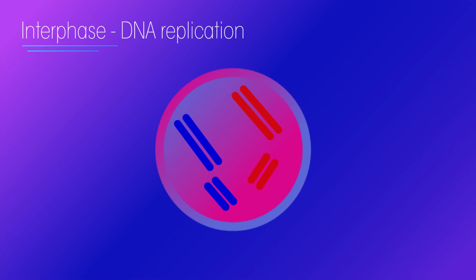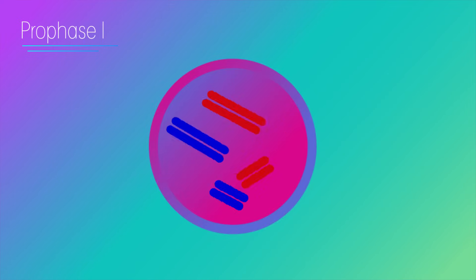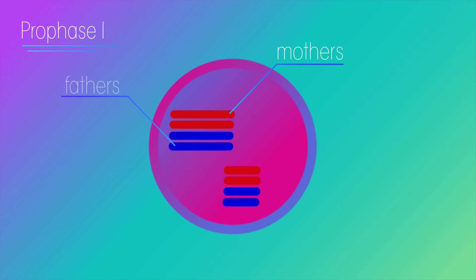In prophase one, the duplicated chromosomes join up with the pair from the other parent, so the mother's pair bind with the father's pair, forming a group of two chromosomes called homologous chromosomes.